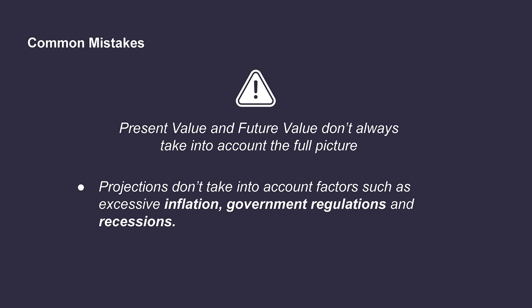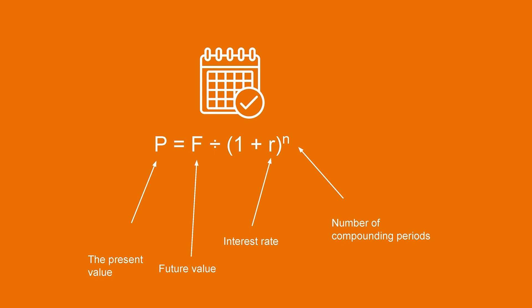So let's take a look at an example of the present value calculation. What if an investor wanted to know how much was needed to be invested today in order to earn a certain return in the future? We'll use the present value calculation to answer this question. Remember, present value equals the future value divided by 1 plus the interest rate to the power of the number of years.